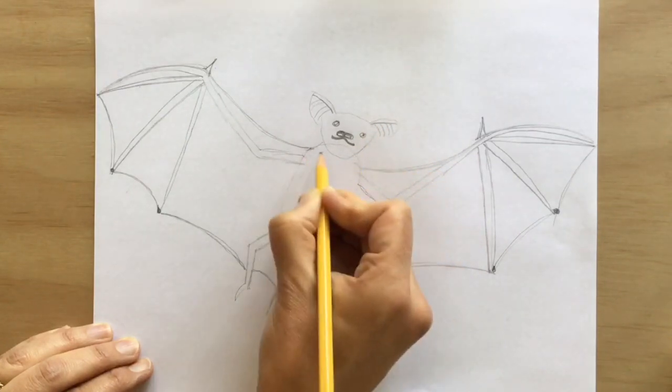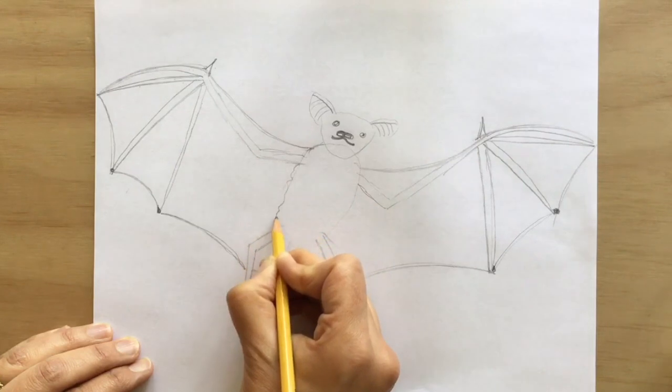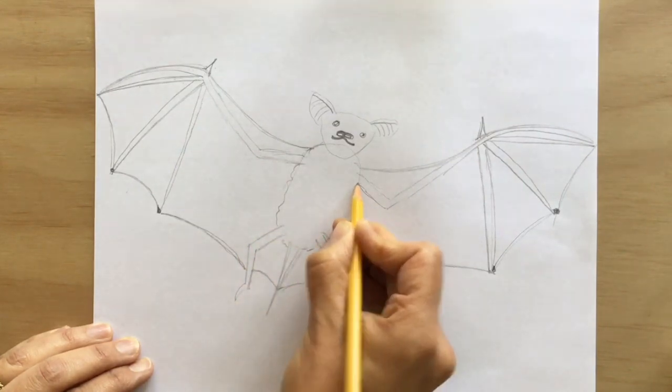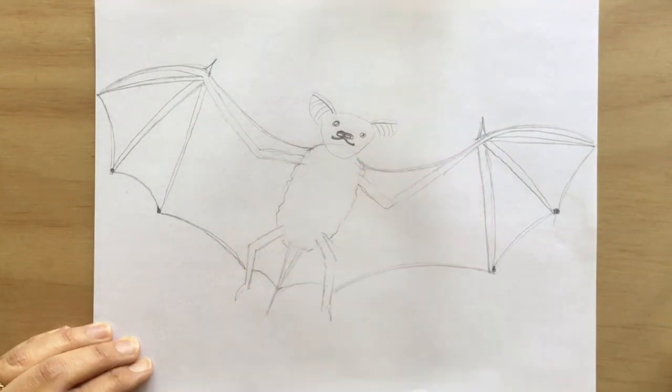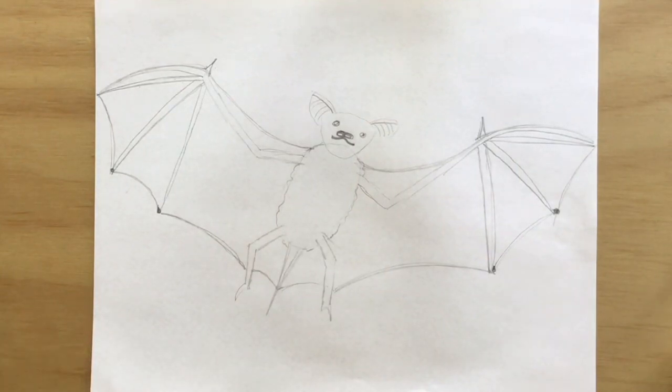Bats are the only mammals to truly fly, so this Mexican free-tailed bat is covered in fur. Draw some shaggy lines around it to indicate that it is furry.